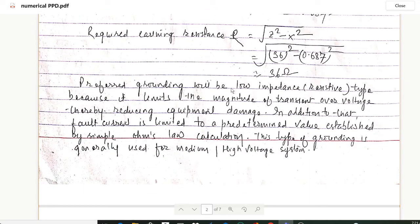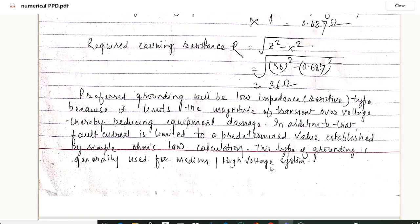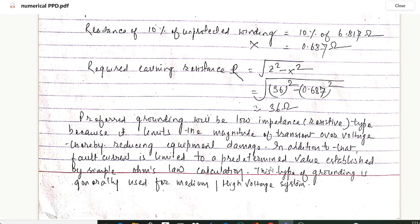Preferred grounding will be low impedance, that is resistive type, because it limits the magnitude of transient overvoltage, thereby reducing the equipment damage. In addition to that, the fault current is limited to a predetermined value established by simple Ohm's law calculation. This type of grounding is generally used for medium and high voltage systems. So in this way you can calculate such type of problems. Hope you enjoyed the lecture. Thanks for watching and please don't forget to subscribe to my channel. Thank you.